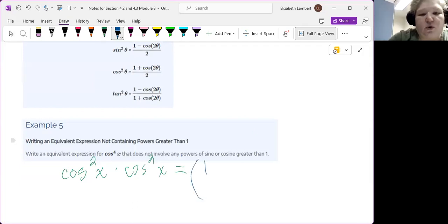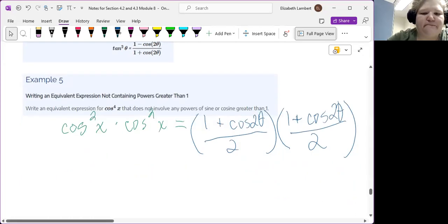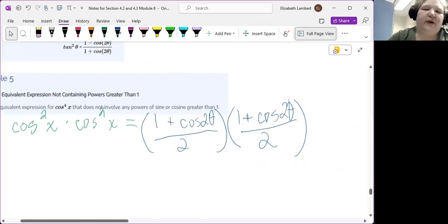And now I'm just going to substitute: 1 plus cosine 2θ all over 2 times 1 plus cosine 2θ all over 2. Now if we wanted to get technical, done. I did the thing. Realistically if you're actually going to have to use this you do need to multiply it out so we'll go ahead and do that.